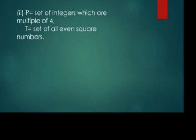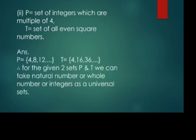Now the next part: P is the set of integers which are multiples of 4, and T is the set of all even square numbers. Let us write them in listing method. Set P contains 4, 8, 12, 16, and so on. Set T contains elements 4, 16, 36, ... The question says all even square numbers: even numbers are 2, 4, 6, ..., so 2 squared is 4, 4 squared is 16, and so on.